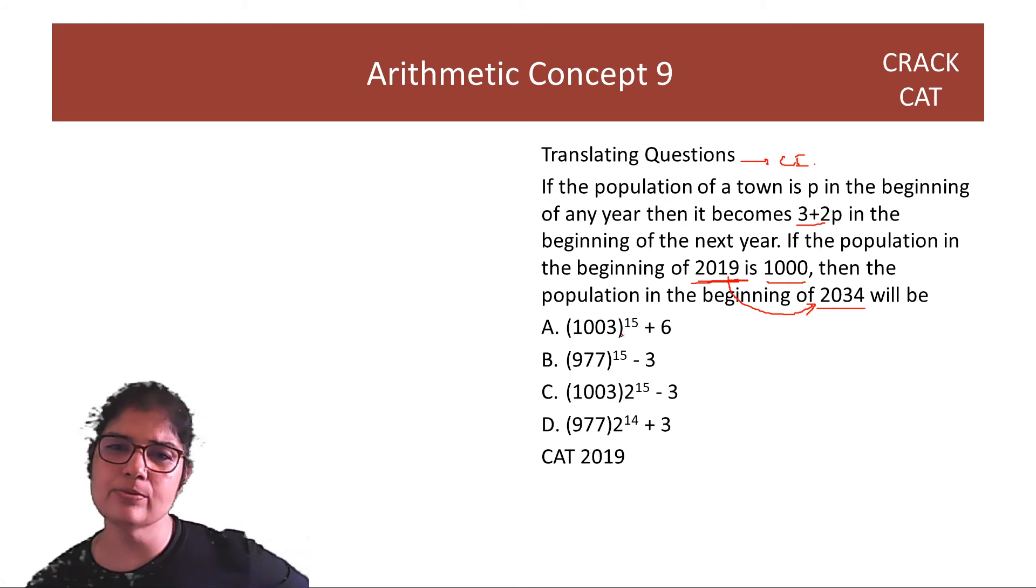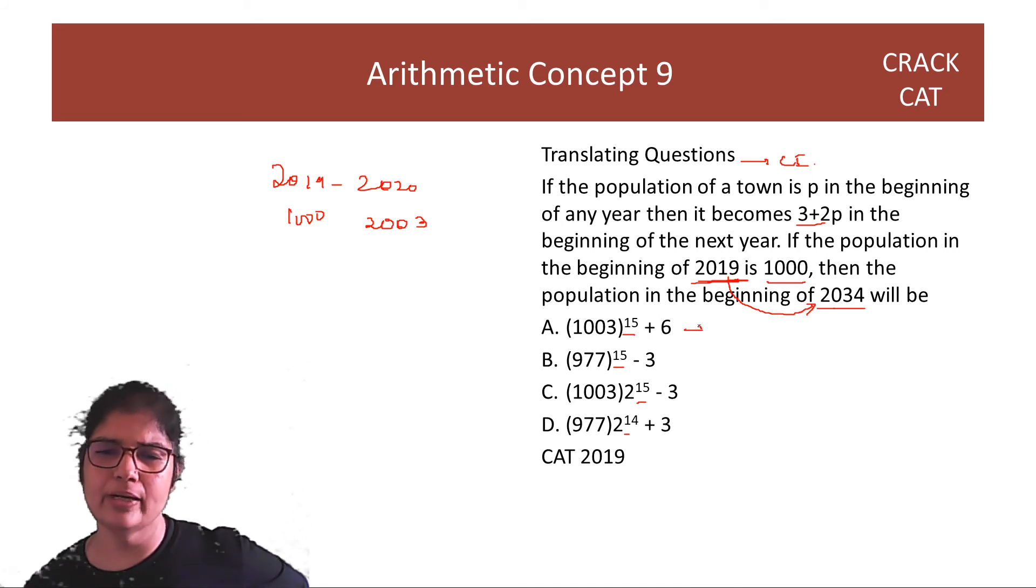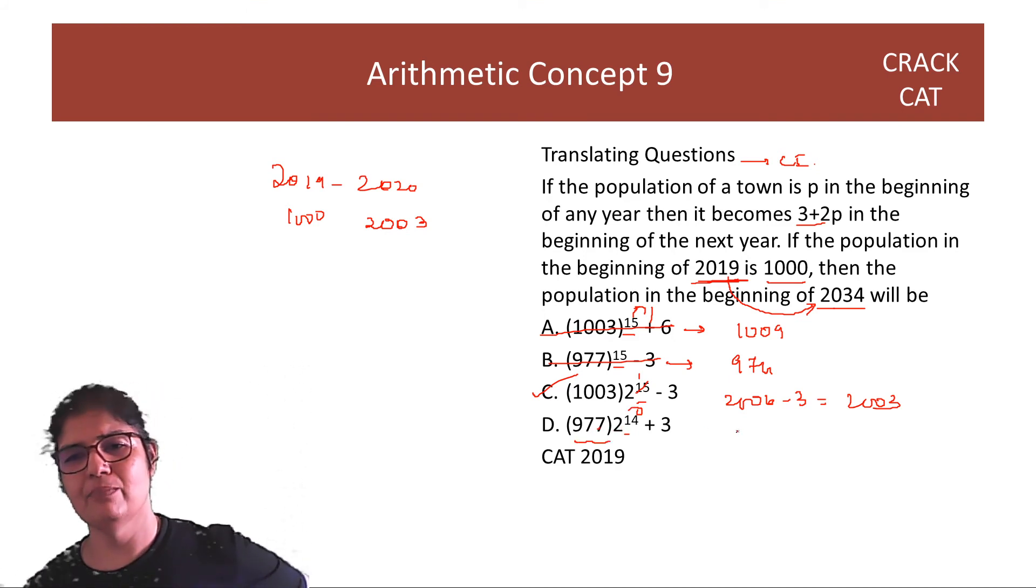So, 15 years pass hota hai. 2019 se 2034. Aur har ek option mein 15 hai. So, agar mein 2019 ko 2020 karti hoon. Toh, kitna hota hai population? 1000 becomes 2003. Double plus 3. So, instead of 15, if I substitute 1 year, I should get, this is a general formula. So, if I substitute 1 year, I get 1009. This is not your answer. I am substituting 15 ke bajaye, I am putting 1. Yaha pe if I put 1, I get 974. Not an answer. Yaha pe I put 1, I get 2006 minus 3. Perfect. Lovely. I get this. Yaha pe I put 0, I need to put, then, I get 977 plus 3, 1000. This also doesn't work. So, answer is option C.